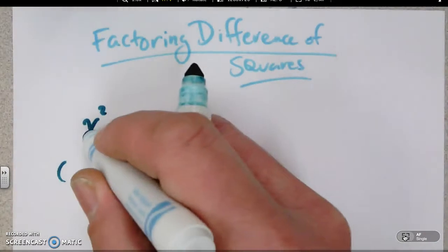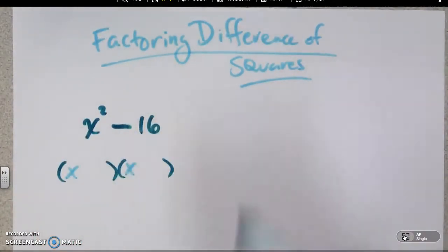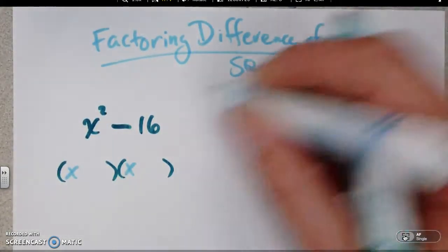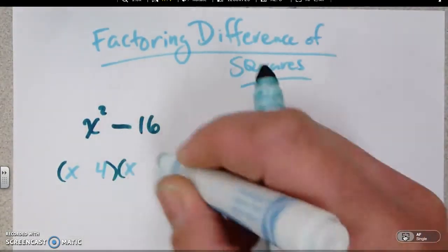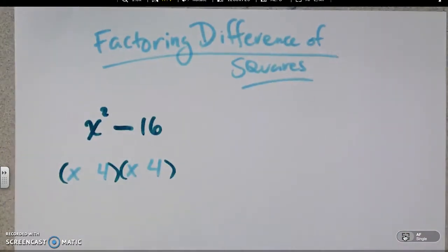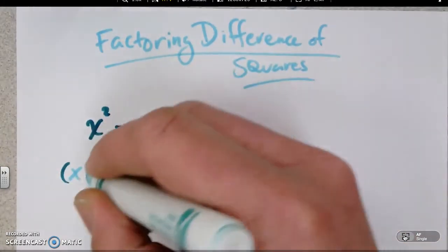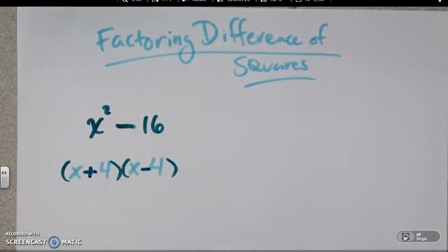Okay, so to get the x squared, that comes from x times x. 16, you could use 8 and 2, but that's not what we're doing here. We're using squares. 16 is a perfect square, so we're using 4 and 4. Now the key thing here is in order for it to be negative, it needs to be a positive and a negative, a plus and a minus 4.